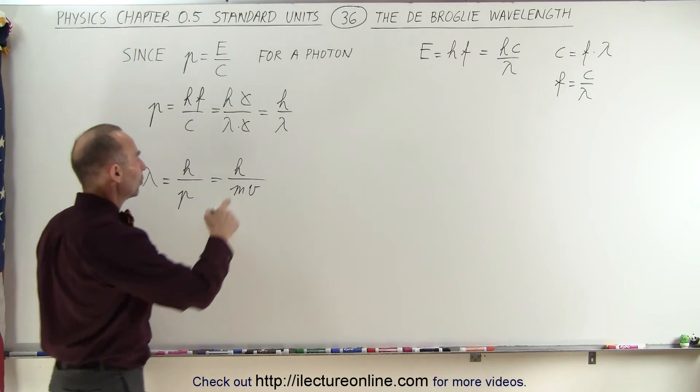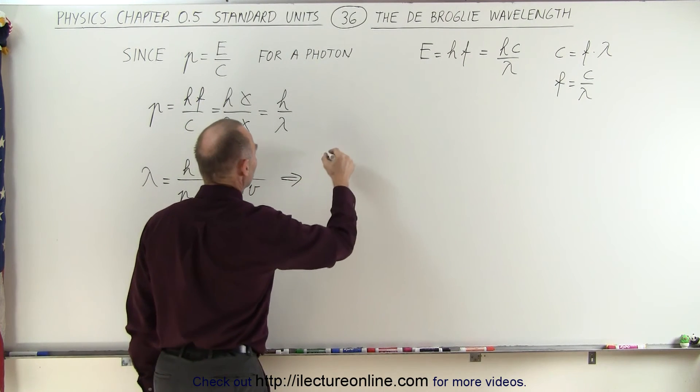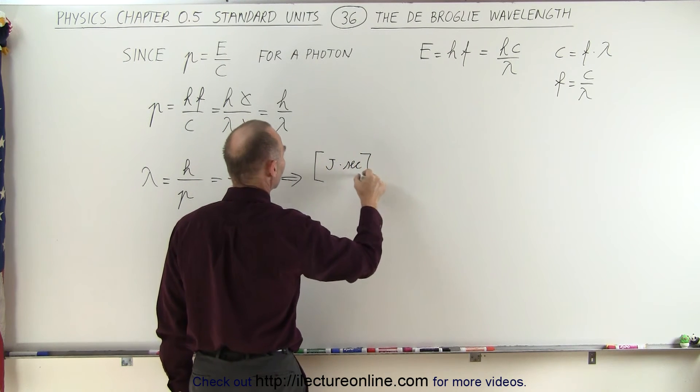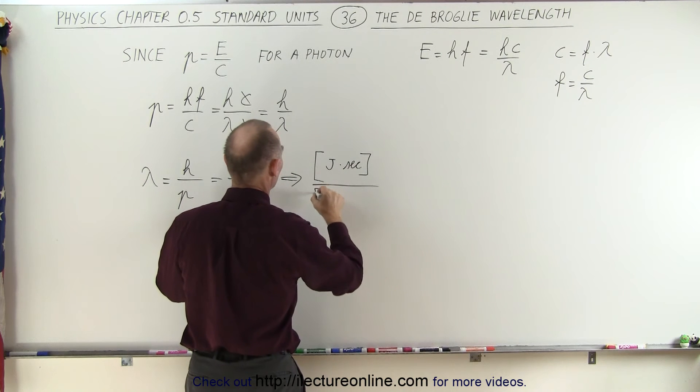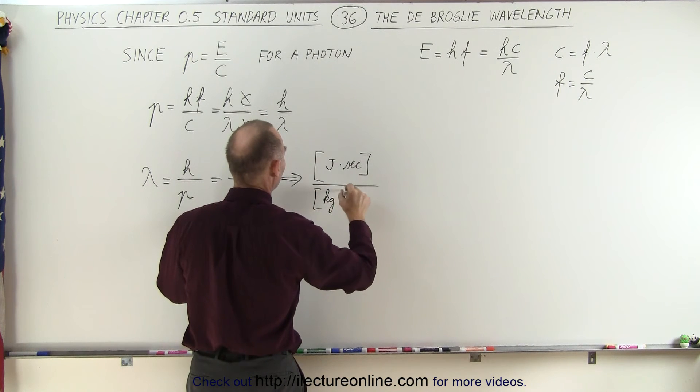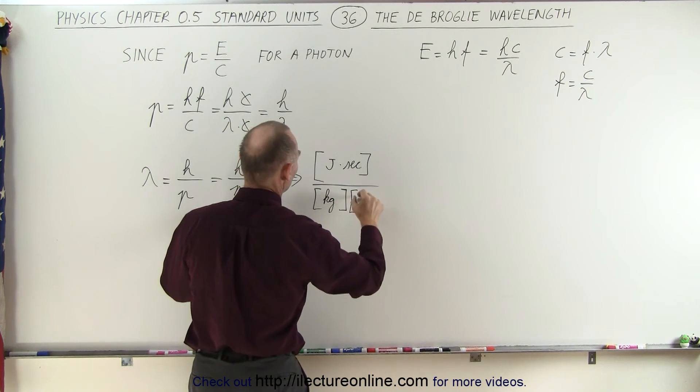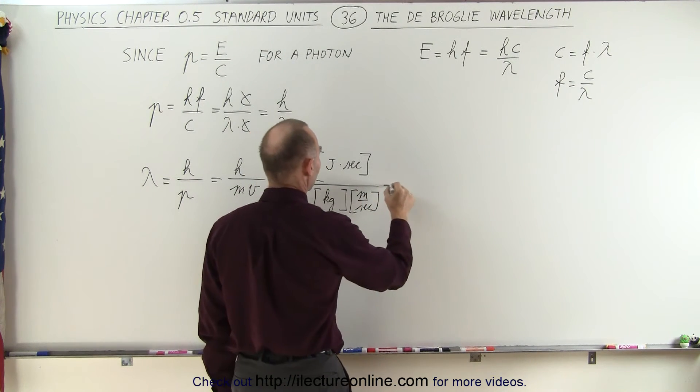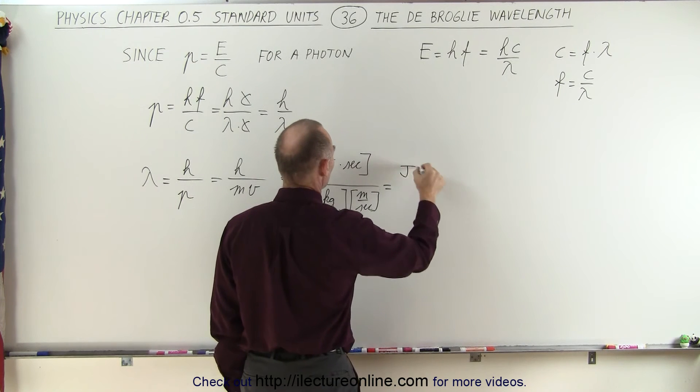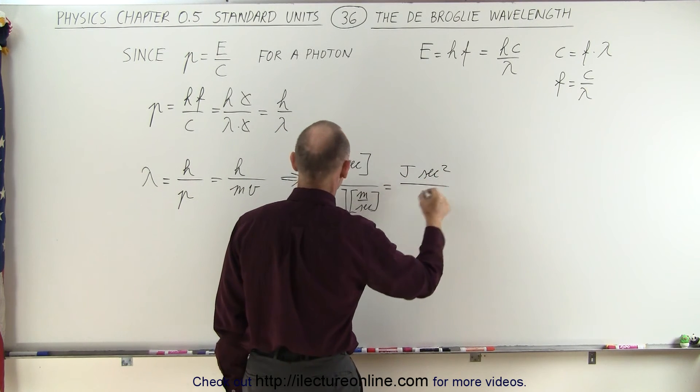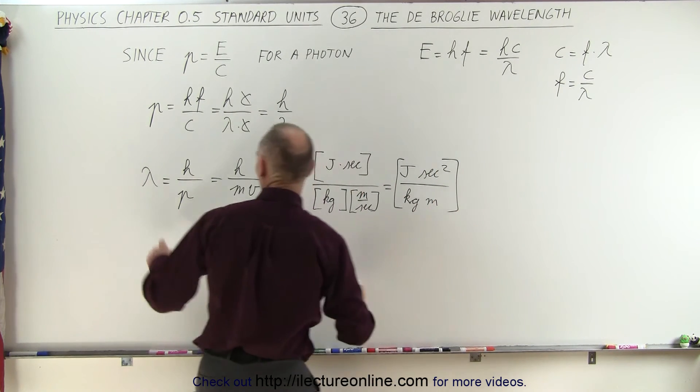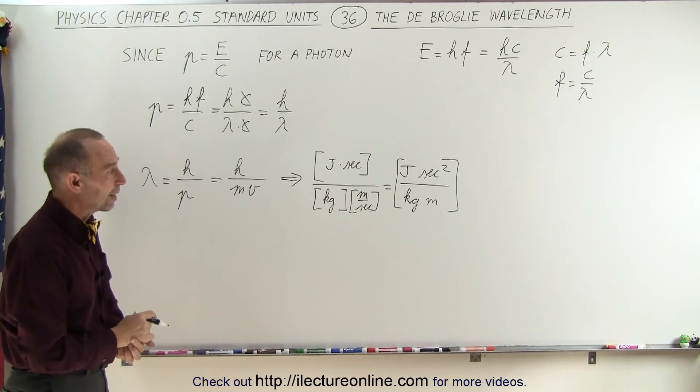Let's see if the units work out. So the units for this, that would be h, which is joules times seconds, those are the units for Planck's constant, divided by the mass, which is kilograms, and divided by the velocity, which is meters per second. And let's see if we clean this up a little bit. So we have in the numerator joules times seconds squared divided by kilograms times meters. Now, that doesn't appear to be on first sight the units of meters, which is what we expect for wavelength.